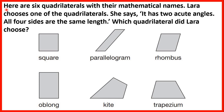Here are 6 quadrilaterals with their mathematical names. Lara chooses one of the quadrilaterals. She says it has 2 acute angles and all 4 sides are the same length. Which quadrilateral did Lara choose? Remember, a quadrilateral is a 4-sided shape because quad means 4. If we look at the square, we can see that all 4 sides are the same length, but Lara can't have chosen the square because she chose a shape which has 2 acute angles.